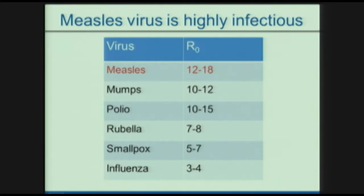You'll hear more about that later. The R-naught value is approximately how many people, if everybody were susceptible to measles, would develop measles having been exposed to one individual. That number for measles is 12 to 18, which is very high — much higher than many other viral diseases. So it's incredibly infectious, meaning we need a high level of immunity in a population to prevent the kinds of outbreaks occurring right now.